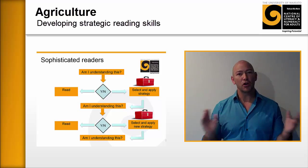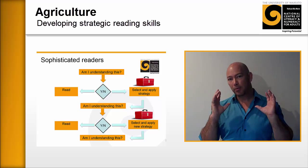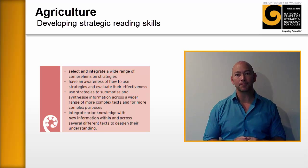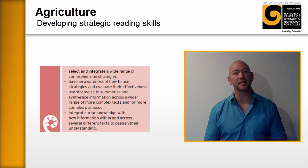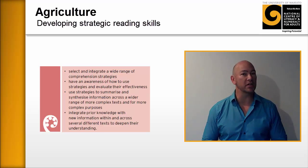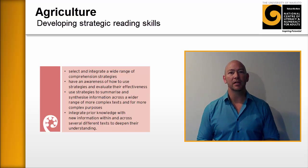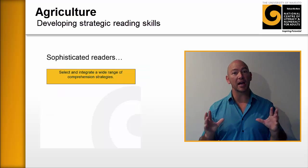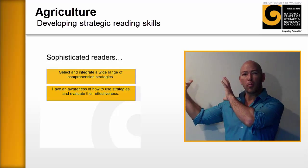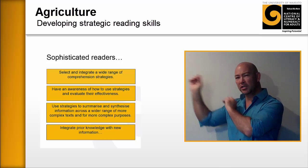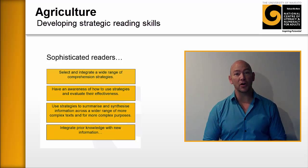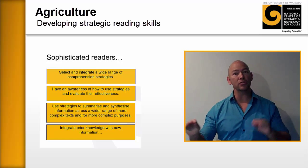Good comprehenders, as described in the learning progressions, are not just great readers — they are people who have a toolbox of strategies that they can draw on. For example, at learning progression step six, a learner is able to select from a wide range of reading comprehension strategies and apply them. A good comprehender is somebody who has a toolbox full of strategies and knows which ones to use for the type of text they're reading.